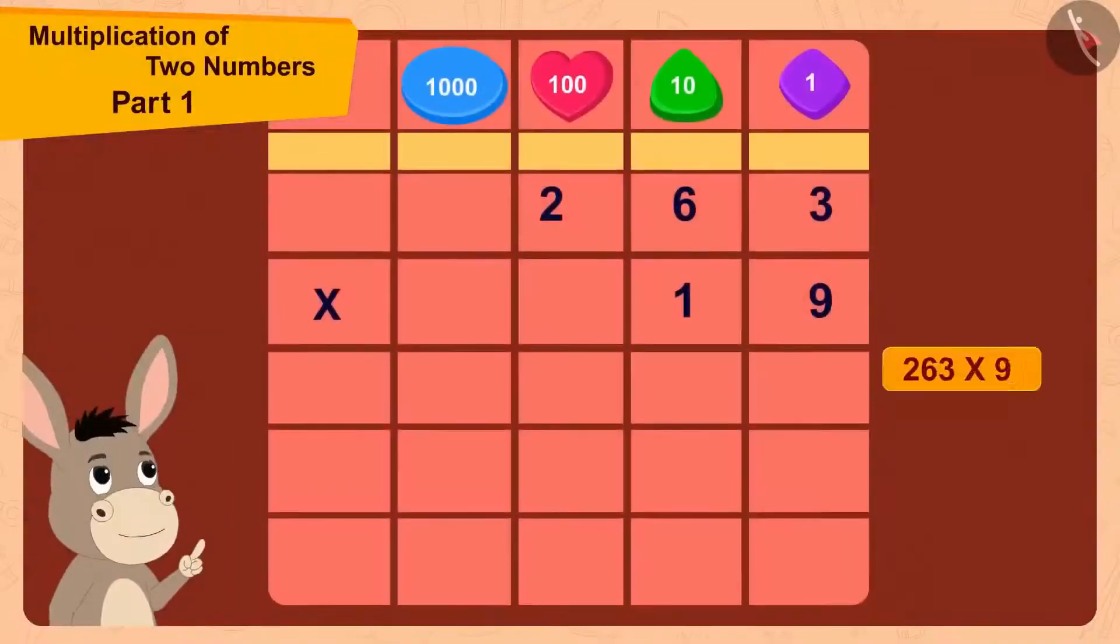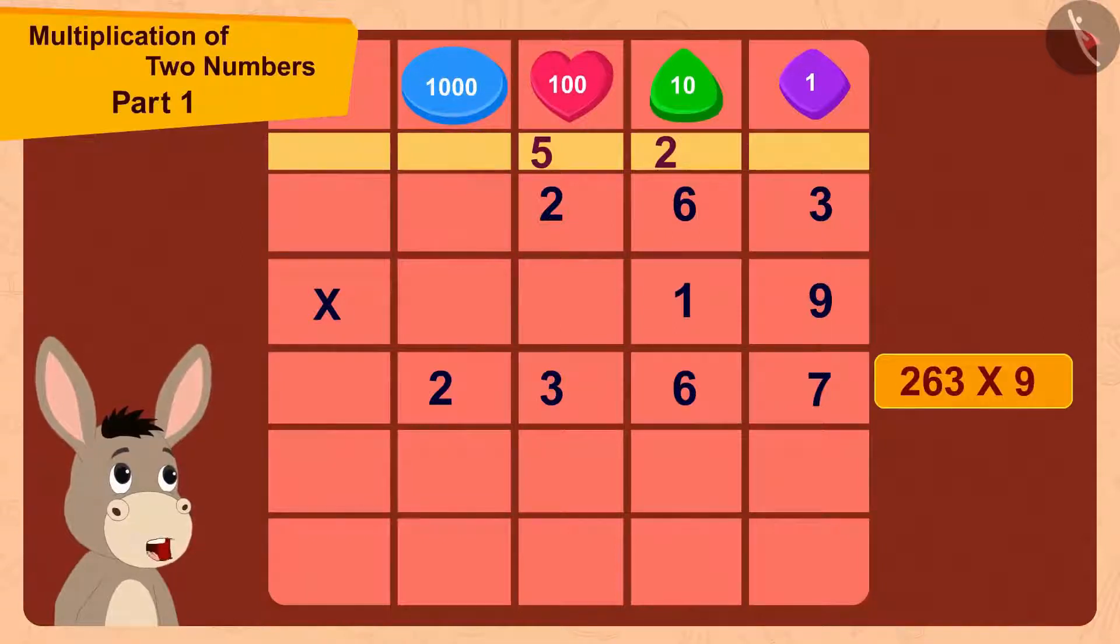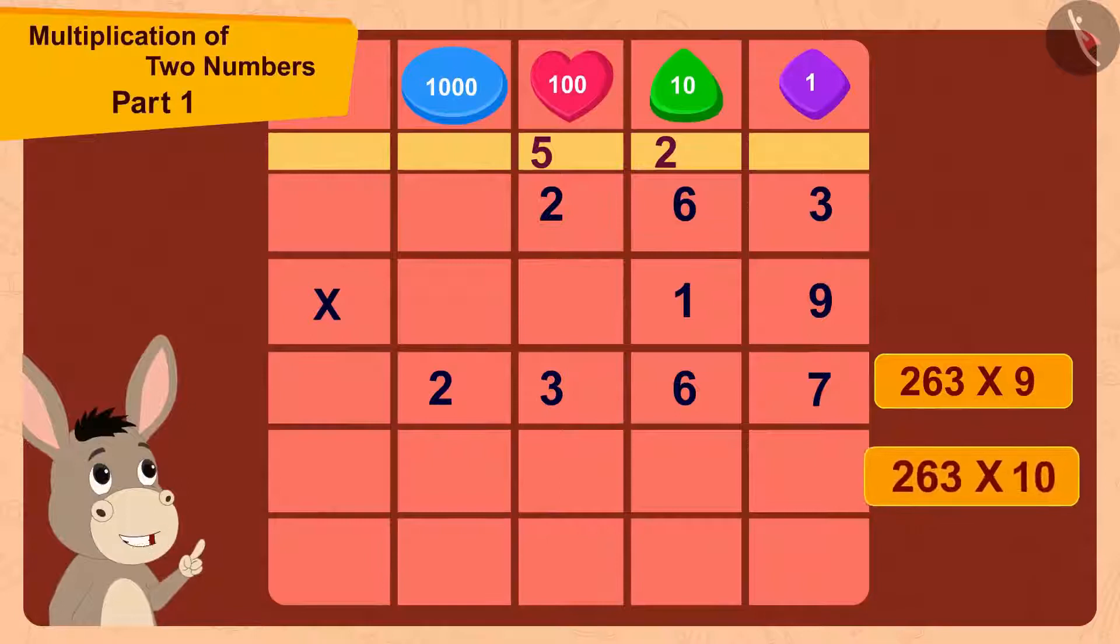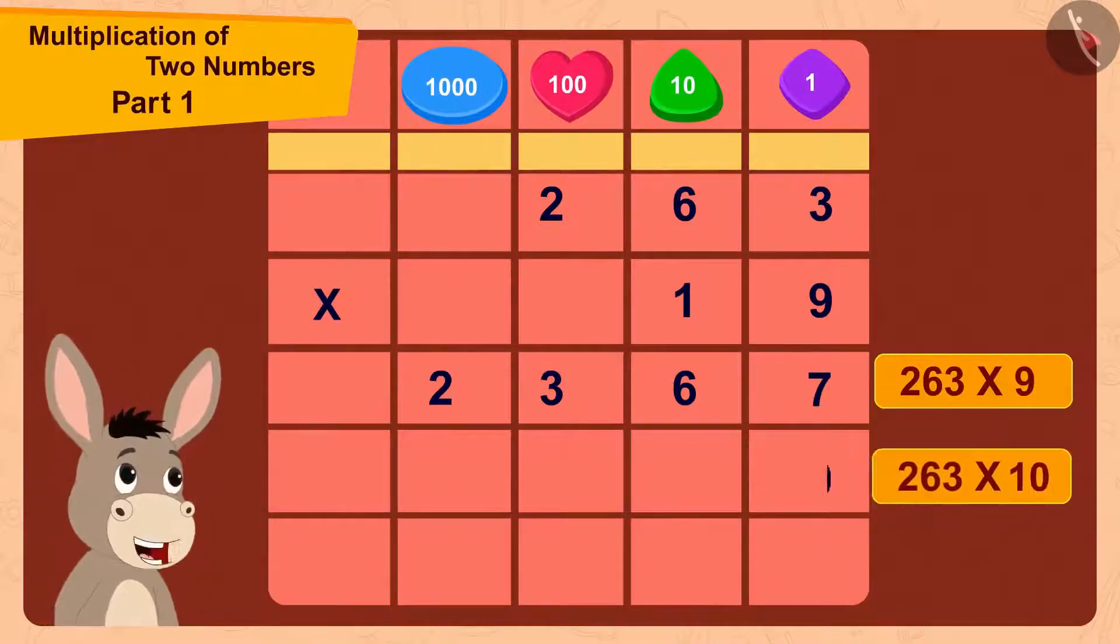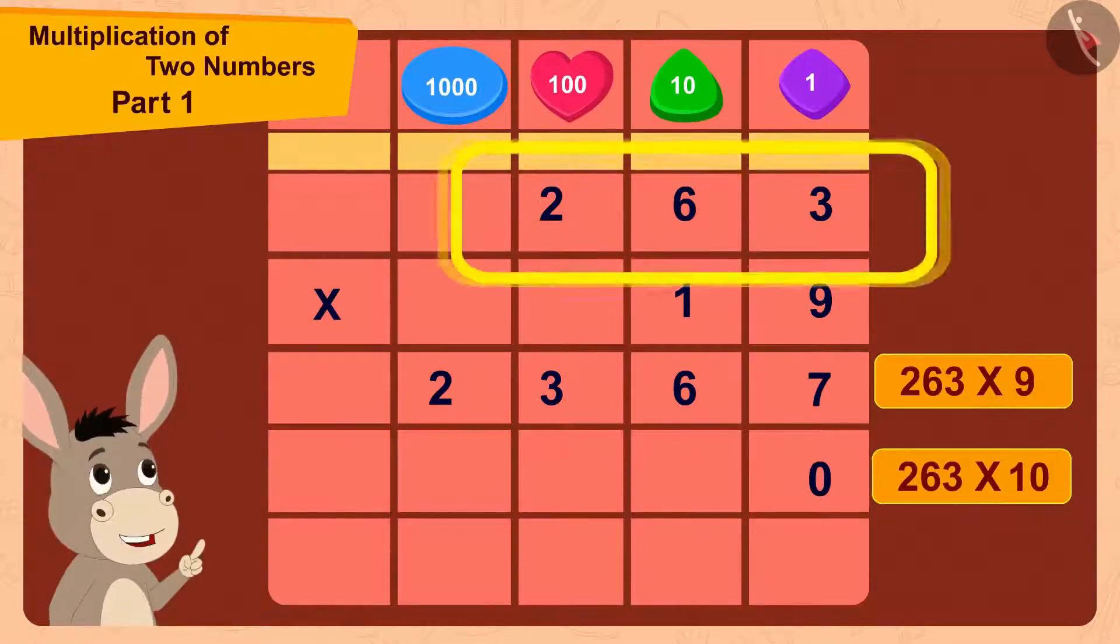9 times 263 is 2367. Now to multiply 263 with 10, first I will write a 0 here, and then I just have to multiply 263 with 1.